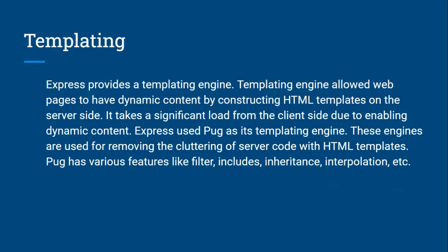Templating: Express provides a templating engine that allows web pages to have dynamic content by constructing HTML pages on the server side. This takes a significant load off the client side by enabling dynamic content. Express uses Pug, as well as EJS and other templating engines. These engines help remove and declutter server code. Pug has various features like filters, includes, inheritance, and interpolation — making it a very powerful tool.